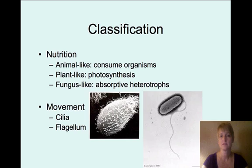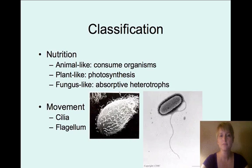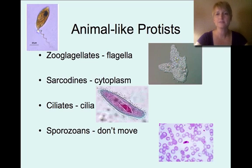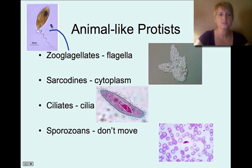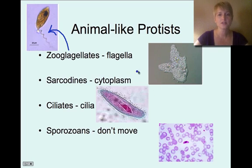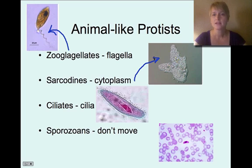Fungus-like protists absorb nutrients from other organisms but don't consume the entire organism. We also classify protists by movement — some have cilia and some have a flagellum. The zooflagellates have a flagella. The sarcodines use their cytoplasm to move; they don't have cilia or a flagellum, but they project their cytoplasm and move that way.